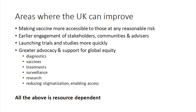Areas where we can improve in the UK: making vaccine more accessible, not being so specific about qualifying for vaccine — just offering it to as many people as possible, obviously depending on availability. We should always aim to engage stakeholders, communities, and advisors very early — we could have done it a bit earlier this time. Launching trials and studies more quickly: unfortunately for various reasons it looks like we've missed the boat slightly and have quite low recruitment numbers for the randomised controlled trials. And not forgetting that we're part of a global community — it's self-defeating if we don't support other countries, particularly those in Africa, with access to diagnostics, vaccines, treatments, surveillance, research, social science, reducing stigmatization, and enabling access to all of these things.